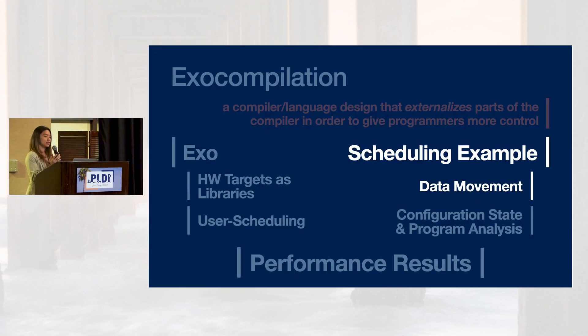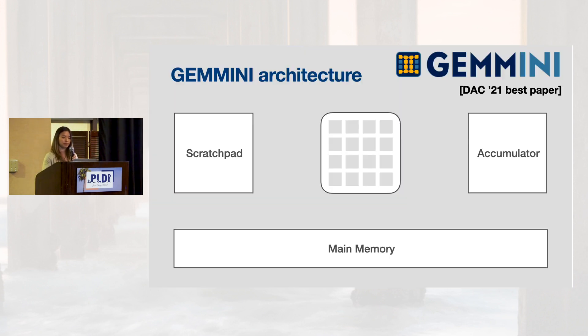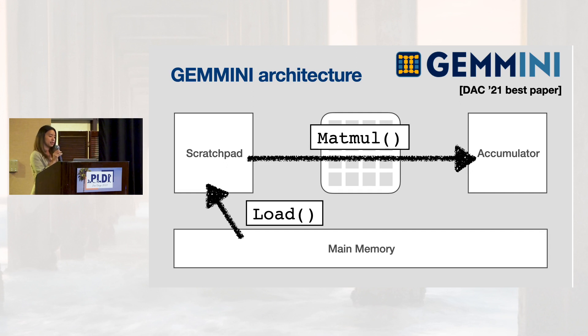So, let's move on to understanding how EXO can be used to optimize data movement. As one of our first hardware backend, we targeted Gemini Accelerator. Gemini is an open-source hardware developed at UC Berkeley, which has been taped out to ASIC. There are only three instructions that you need to know for this talk. Load instruction loads input from DRAM to scratchpad. Matmul does a 16x16 matrix multiplication using input from scratchpad and puts a result into the accumulator. Store instruction stores the output from accumulator to DRAM.